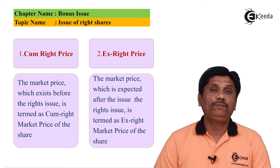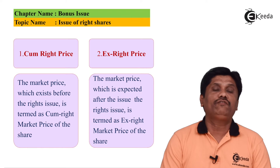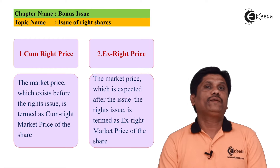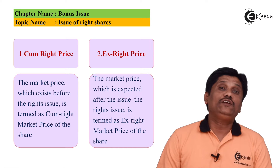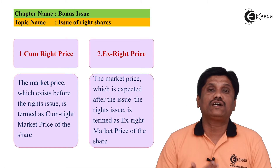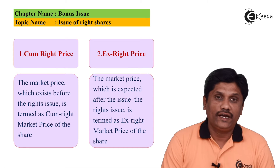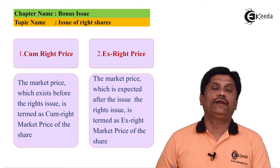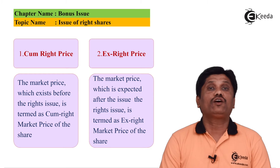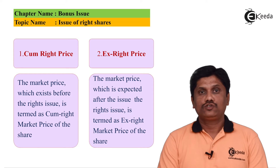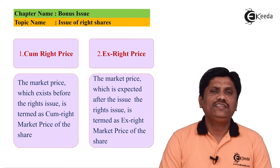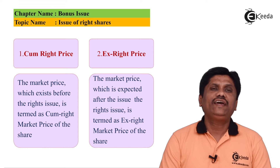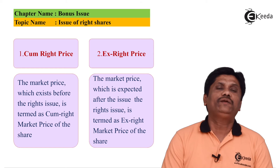The price prevailing in the market after declaration of right but before actual issue of the right shares — that price which is prevailing in the market will be called as the cum-right price. Cum-right price matlab kia — wo price mein kuch inflated value rahi gi because the company is coming up with the right issue. Aur agar ek baar right issue ho jata hai, phir vaapas market ka price niche aa jaega and that will be called as the ex-right price.